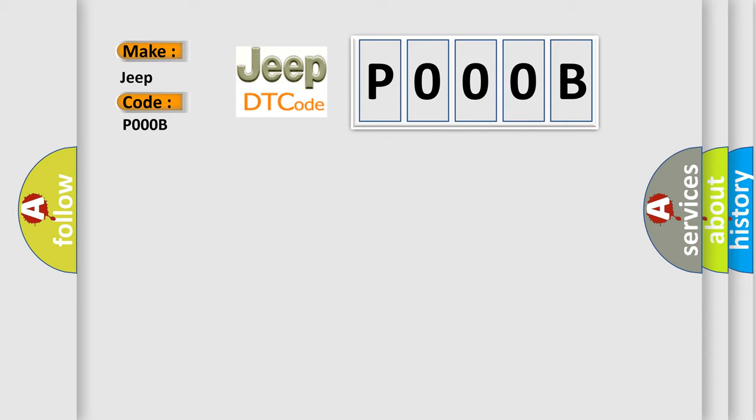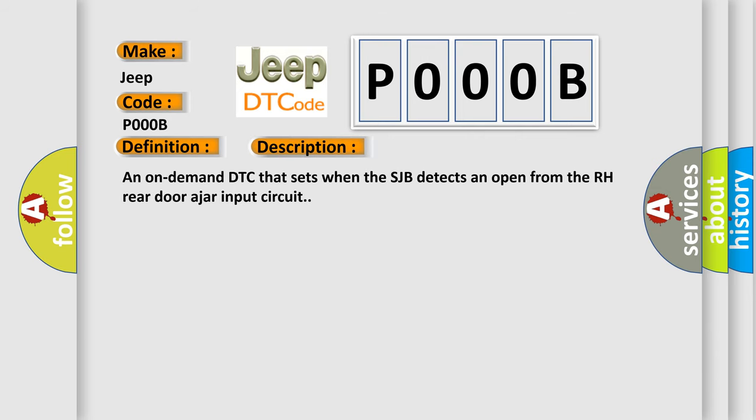The basic definition is: Door ajar RR circuit open. And now this is a short description of this DTC code. An on-demand DTC that sets when the SJB detects an open from the RH rear door ajar input circuit.